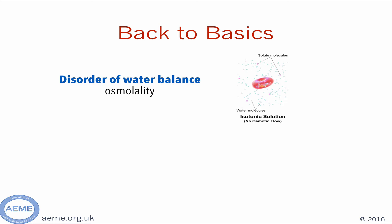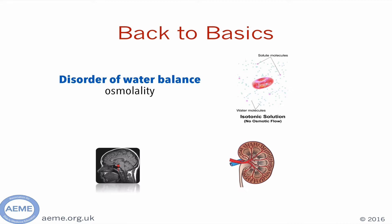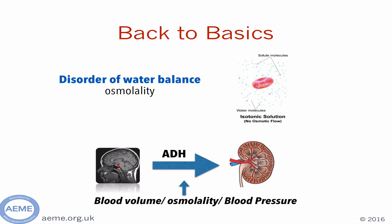Osmolality is maintained at a fairly constant level by a feedback mechanism between the hypothalamus and the kidney, using antidiuretic hormone, or ADH, to regulate either conservation or excretion of water by the kidney. ADH release responds to plasma osmolality changes, blood pressure, and blood volume changes. Normally, a high osmolality, or concentrated blood, will stimulate ADH release to conserve water. A low osmolality will do the opposite.